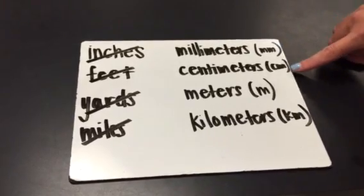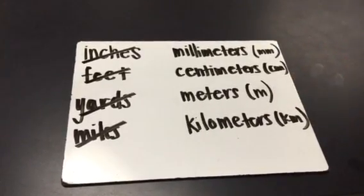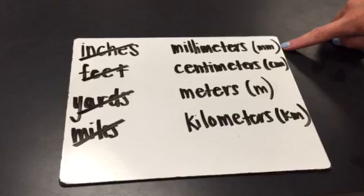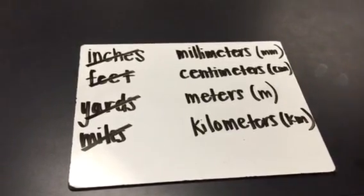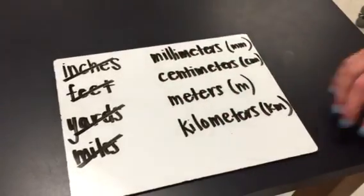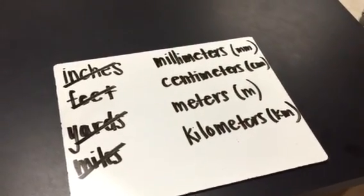So you'll see the abbreviations I have behind here are all lowercase, and we have a double lowercase mm, cm, m, and km. So these are our metric units that we're going to be using here in science class this year.